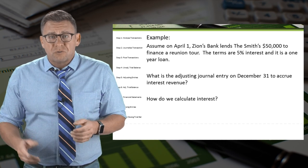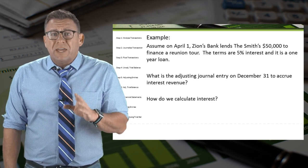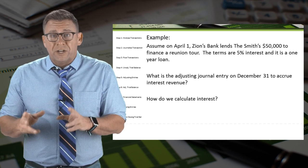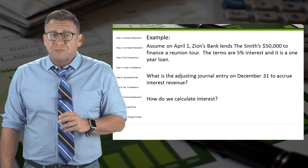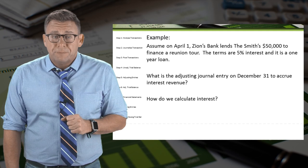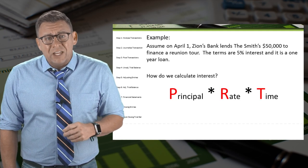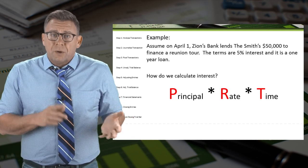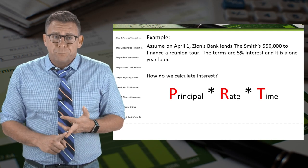The answer is interest revenue. But in order to make the adjusting journal entry to record the accrued interest revenue, we must first figure out how much interest they've earned. How do we calculate interest? I use the acronym PERT: principal times rate times time.